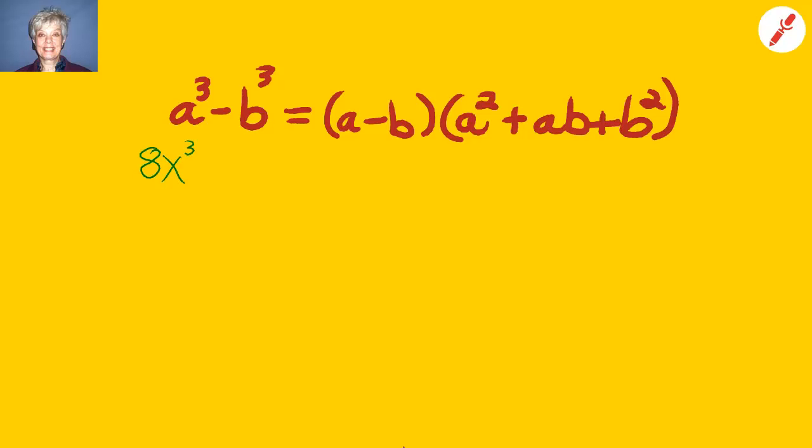Now, we're going to do a problem that's very similar to the last problem, except this time we have a minus sign in the middle. 8x to the third can be written as quantity 2x cubed, and 27 can be written as 3 cubed, so that just like before, your a is 2x, and your b is 3. And everywhere you see an a, stick in a 2x, and everywhere you see a b, stick in a 3.